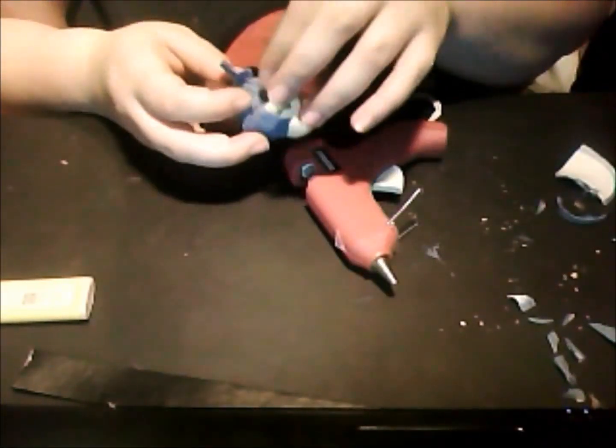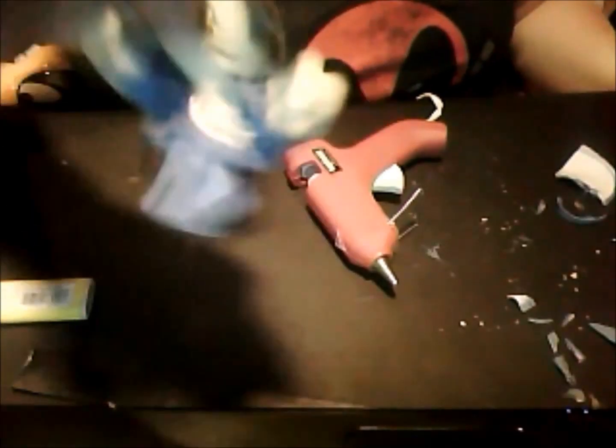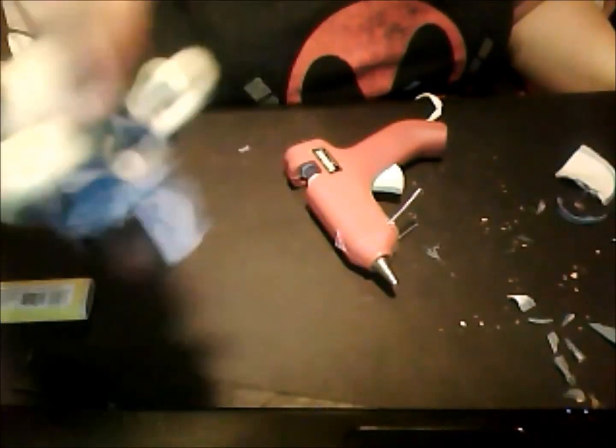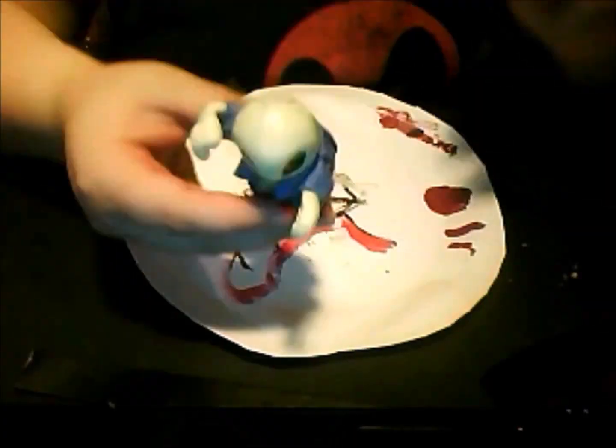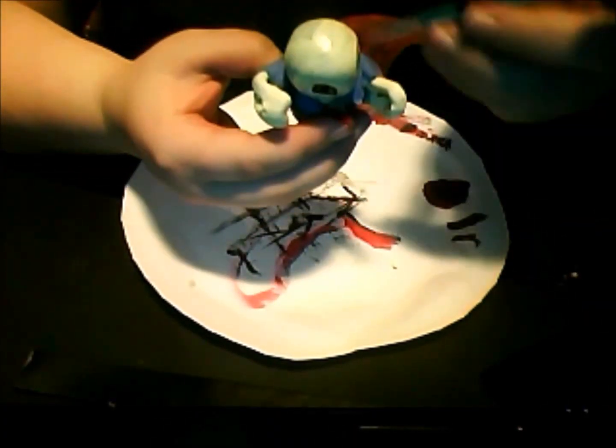Now you are going to put the button on. This is what it should look like. Mix the red and black paint again and now we are going to make cuts and bruises on Ash's shirt.